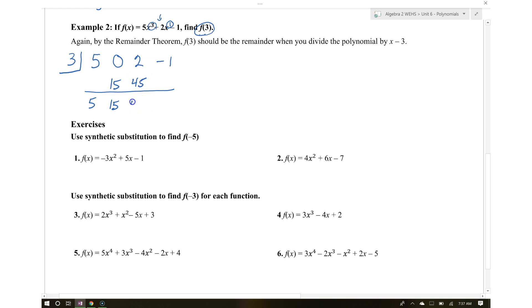2 plus 45 gives you 47. Then 3 times 47 gives you 141. Adding these gives you 140, so f of 3 equals 140. When 3 is placed into the polynomial, you get 140.